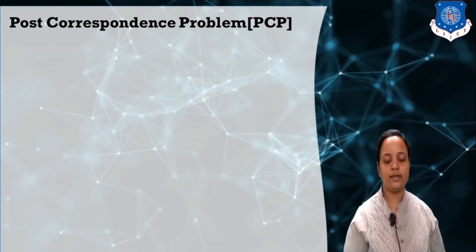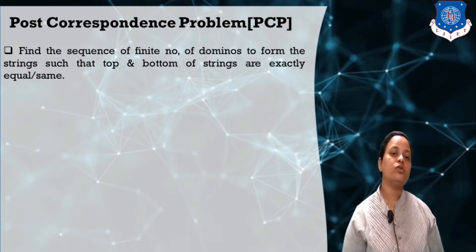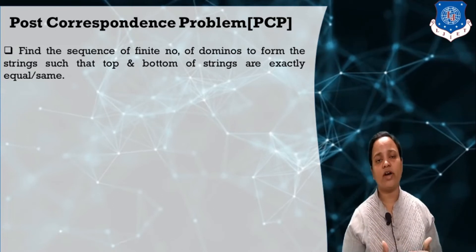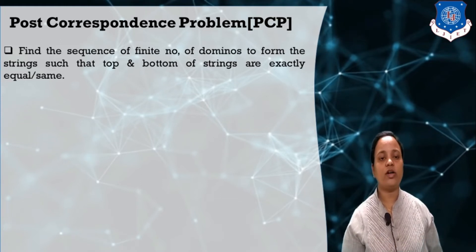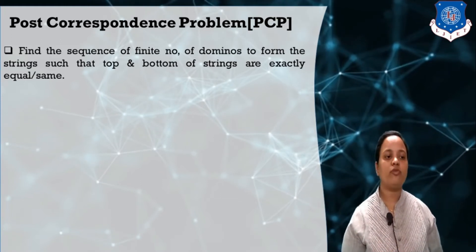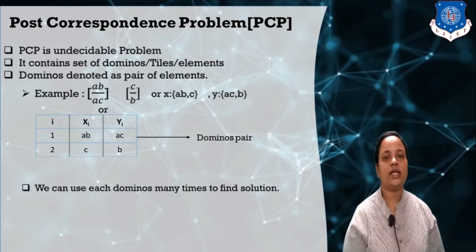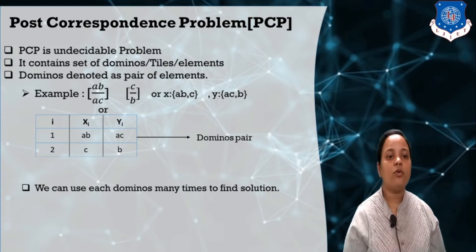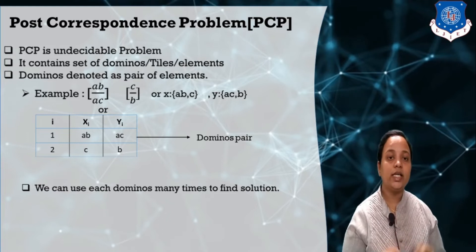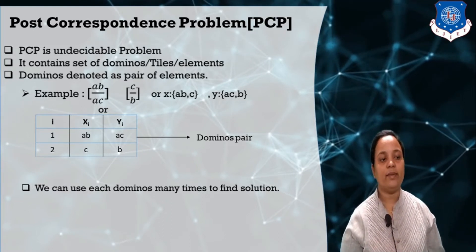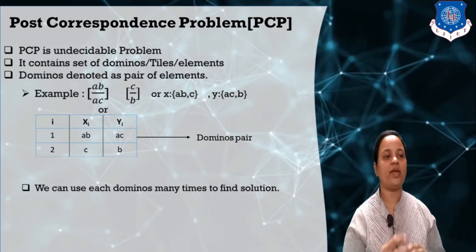Let us understand this concept in a more specific way. We have to find out a sequence of a finite number of dominos. A pair a/b is called a domino, and we need to form strings such that the top and bottom strings are exactly equal. The Post Correspondence Problem is an undecidable problem and it basically contains dominos, tiles, and elements. A domino is represented as a pair of elements.